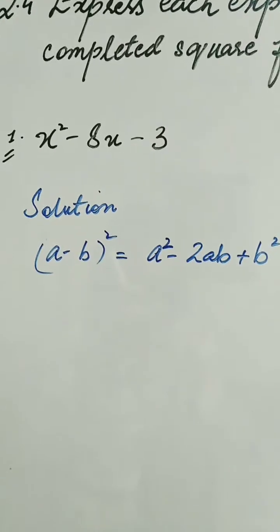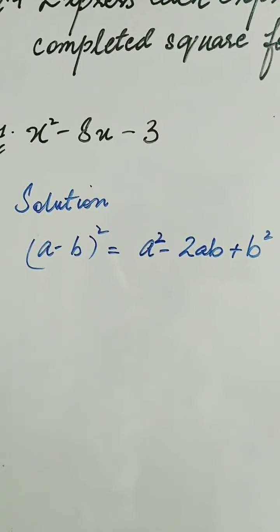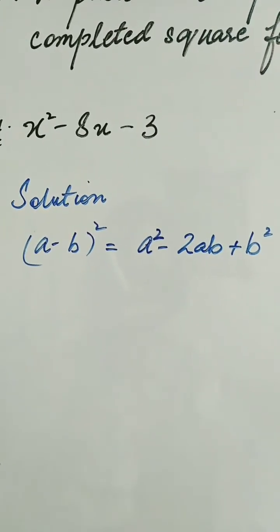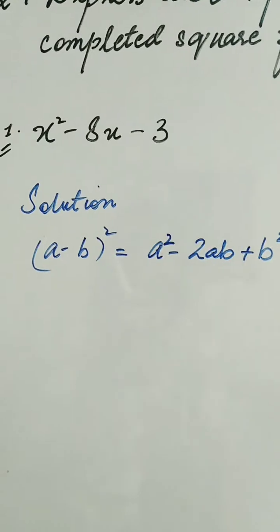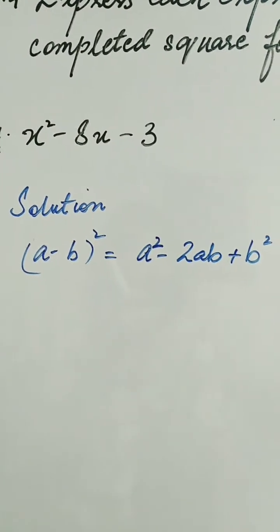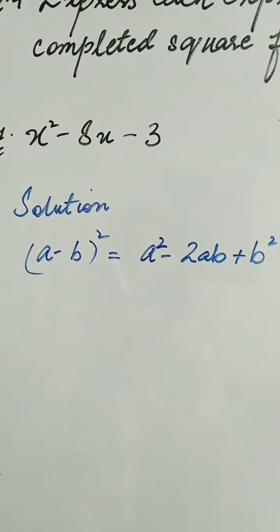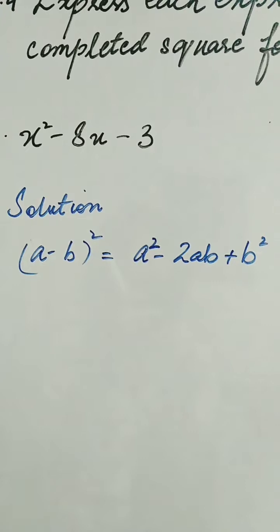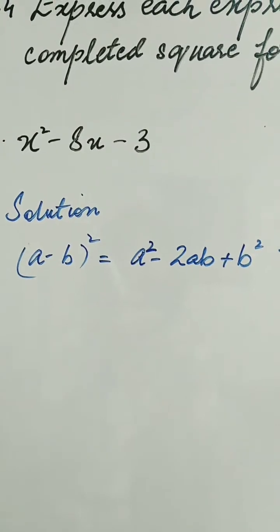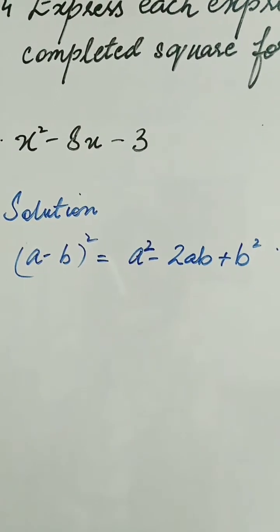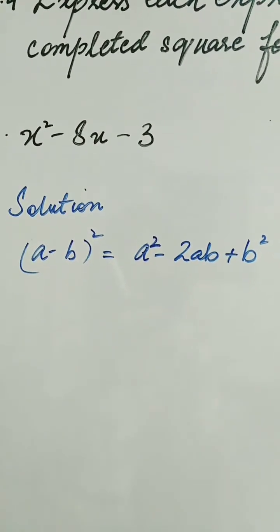Here we can see that we have the expression x squared minus 8x minus 3. There is a minus sign, so we use the formula a minus b whole square, which is equal to a squared minus 2ab plus b squared.